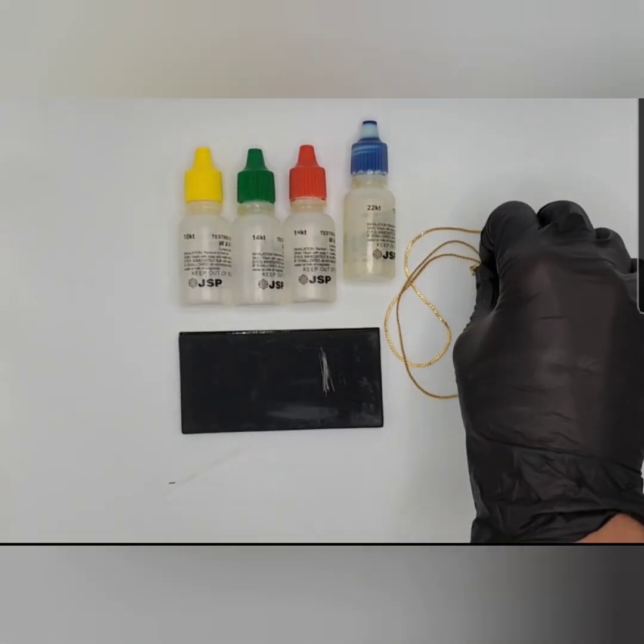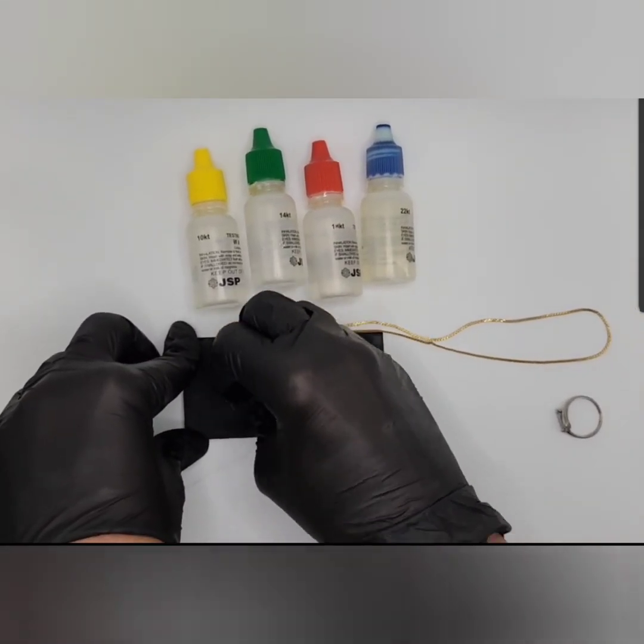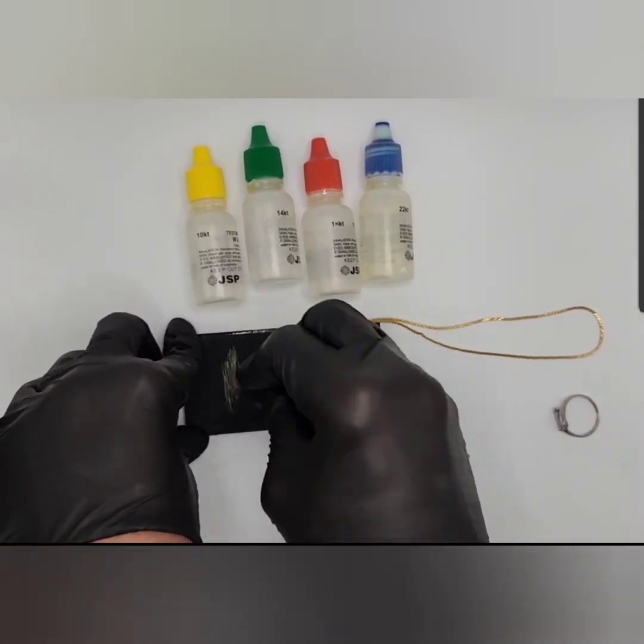Gold test kits work by marking a testing stone with an unknown metal and applying nitric acid. When the acid is applied, it will dissolve the mark of any item that isn't gold.